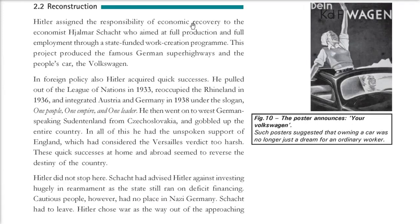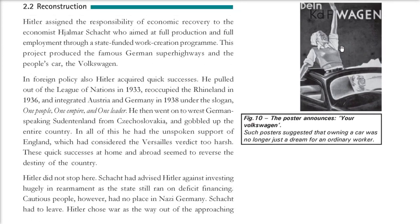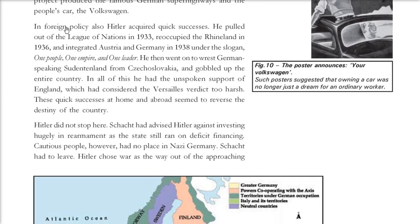For economic recovery, Hitler assigned responsibility to Hjalmar Schacht, who aimed at full production and full employment through a state-funded work creation program. The German superhighways and the Volkswagen — the people's car — were built. Posters indicated that owning a car was no longer a dream for ordinary workers. In foreign policy, Hitler pulled out of the League of Nations in 1933, reoccupied the resource-rich Rhineland in 1936, and integrated Austria and Germany under the slogan: one people, one empire, one leader.